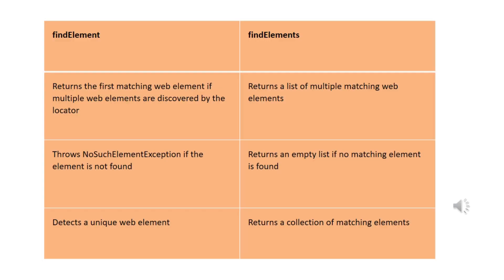So, what is findElement and findElements? We are already using findElement in the web. The first method is findElement. What is the difference? findElement — it is not a locator like id or class. If you have a unique element with a unique id or name, we are picking findElement. If you use findElements, you can find multiple elements on the page with the same locator.